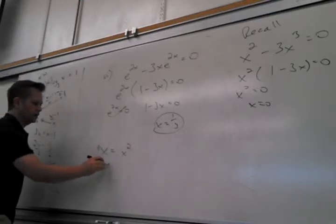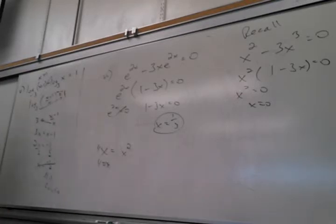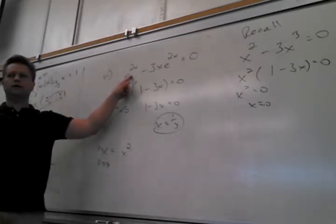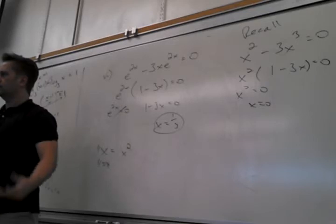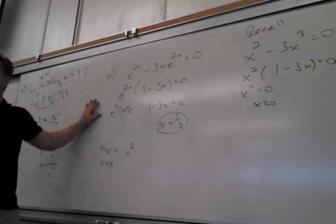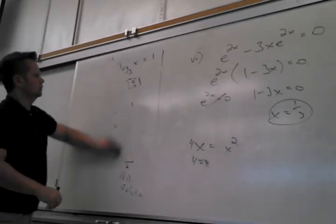If you divide by something that could equal 0, you might be losing an answer. For example, this equation, if you divide by x, you get 4 equals x. But you lost an answer. You totally lost an answer. What's the answer I lost? Zero. I lost the answer of zero. So not only can you not divide by it because it could equal zero, but if you do, you're losing a possible answer. But this e^(2x) is never zero. You can just divide by it. It's like a 7. I can divide by 7 all day long.